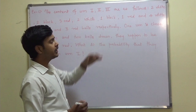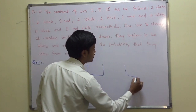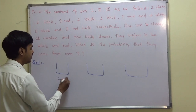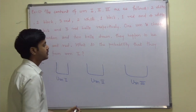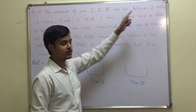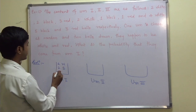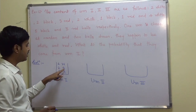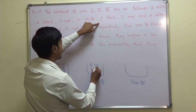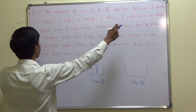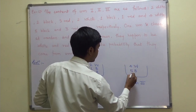The problem involves urns 1, 2, and 3. Let me draw the urns. Urn 1 contains 2 white, 2 black, and 3 red balls. I am denoting black by B, red by R, and white by W. The second urn contains 2 white balls, 1 black ball, and 1 red ball. And the last one contains 4 white balls, 5 black balls, and 3 red balls.